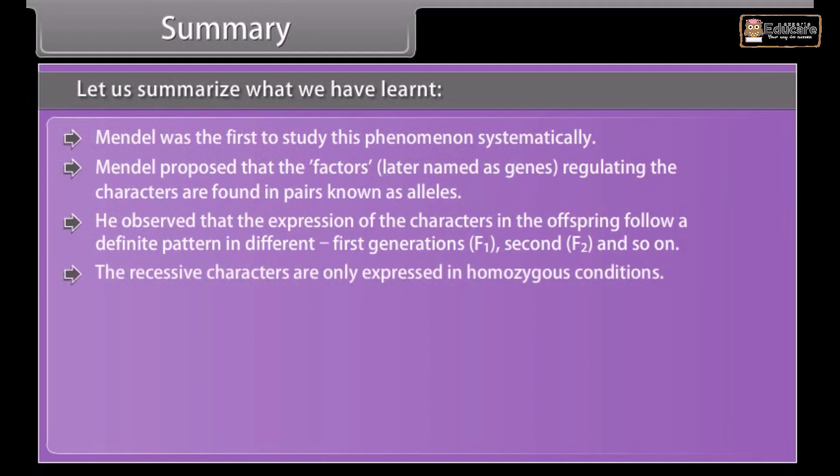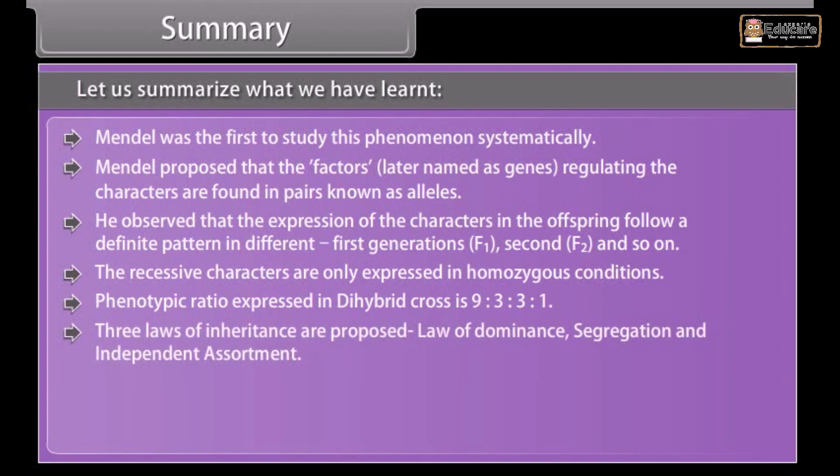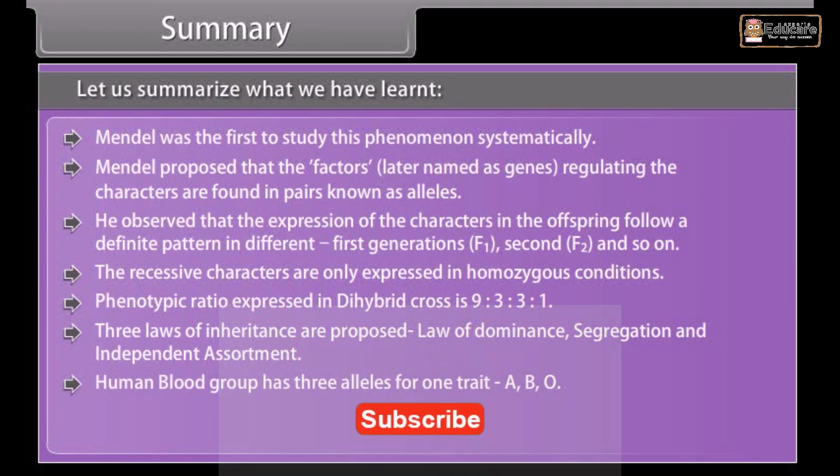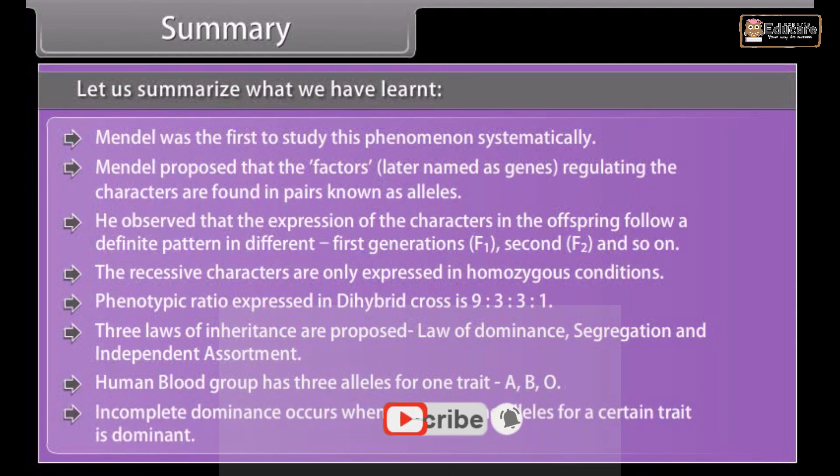The recessive characters are only expressed in homozygous conditions. Phenotypic ratio expressed in dihybrid cross is 9:3:3:1. Three laws of inheritance are proposed: law of dominance, segregation, and independent assortment. Human blood group has three alleles for one trait A, B, O. Incomplete dominance occurs when neither of the alleles for a certain trait is dominant.